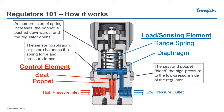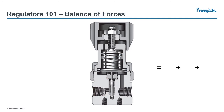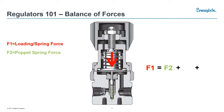The self-actuating part is reliant on balancing of forces. F1 is our loading or spring force, which is dependent primarily on the spring rate and the amount compressed by the adjustment knob. F2 is our poppet spring force, dependent on the spring rate of that poppet spring — this will generally slightly increase as the poppet starts to open.